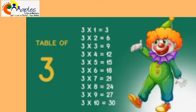3 7s are 21, 3 8s are 24, 3 9s are 27, 3 10s are 30. Now you learn this table at home.